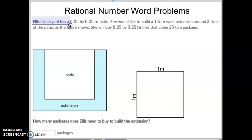Elsa's backyard has a 6.25 by 6.25 patio. Whenever I have tough problems, I like to label my thing, so every side of this patio is currently 6.25 by 6.25. She would like to build a 1.5 meter extension around three sides of the patio.